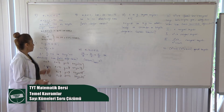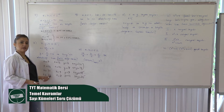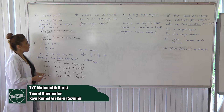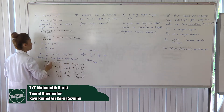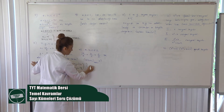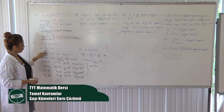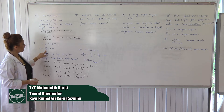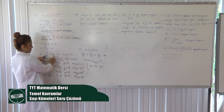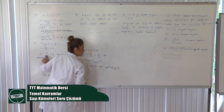Tam sayılar kümesinde negatif tam sayılarımız da var, yani bunların bir de negatif değerlerini düşüneceğim. Z'ye eksi 7 verdim: 42 bölü eksi 7 = eksi 6, 7 daha X = eksi 1 bulurum. Z = eksi 7 için Y = eksi 1 artı 6 = 5 çıkar. X artı Y = 6 gelir.